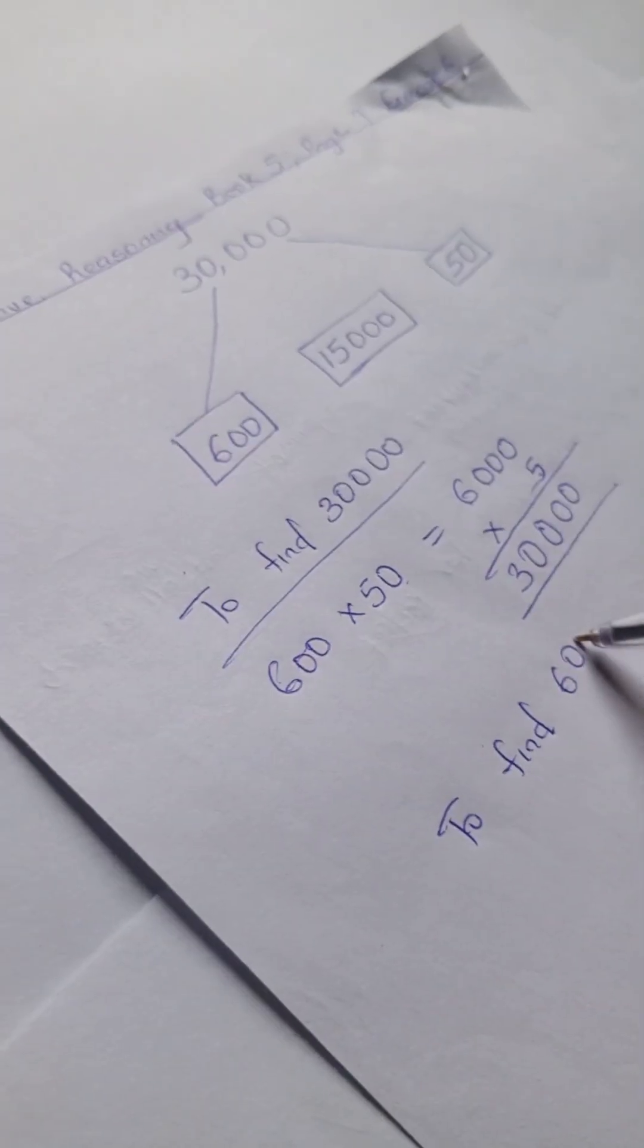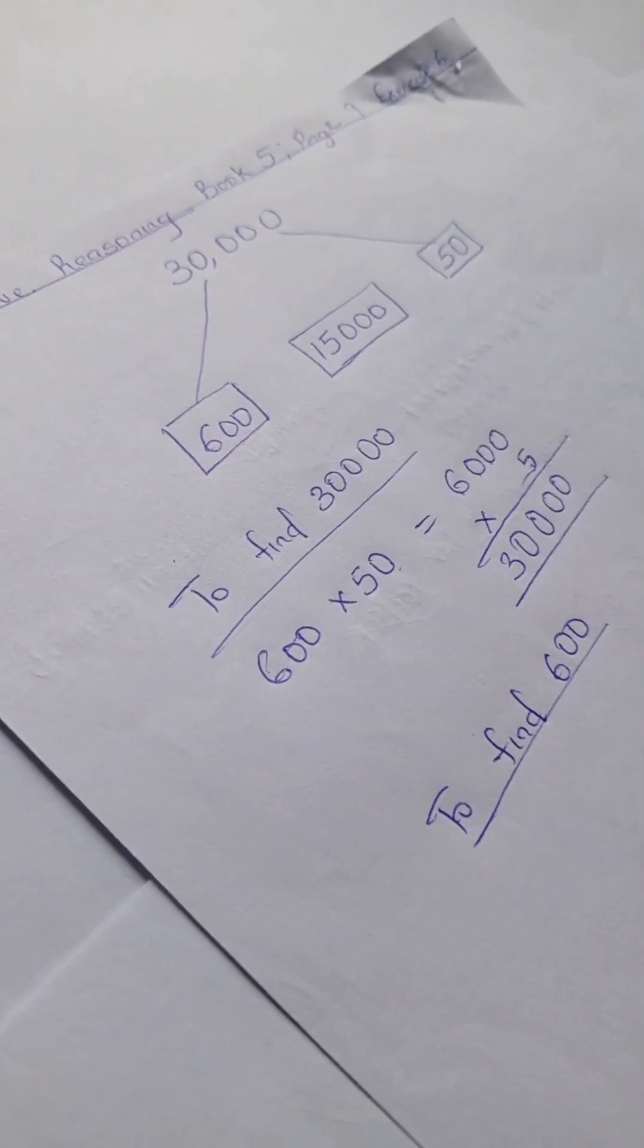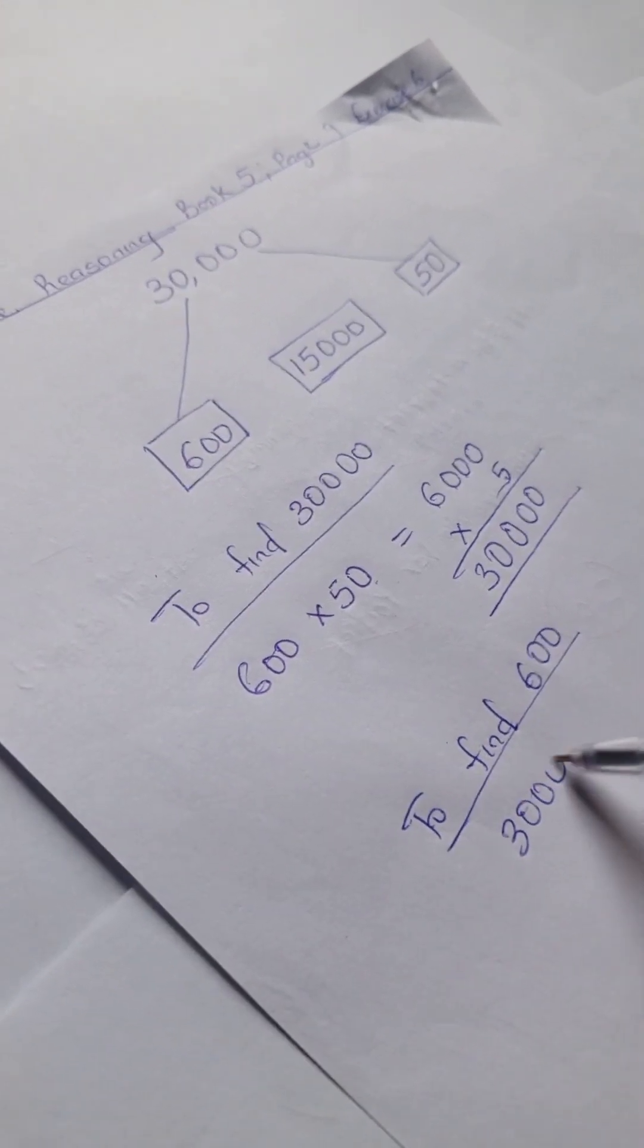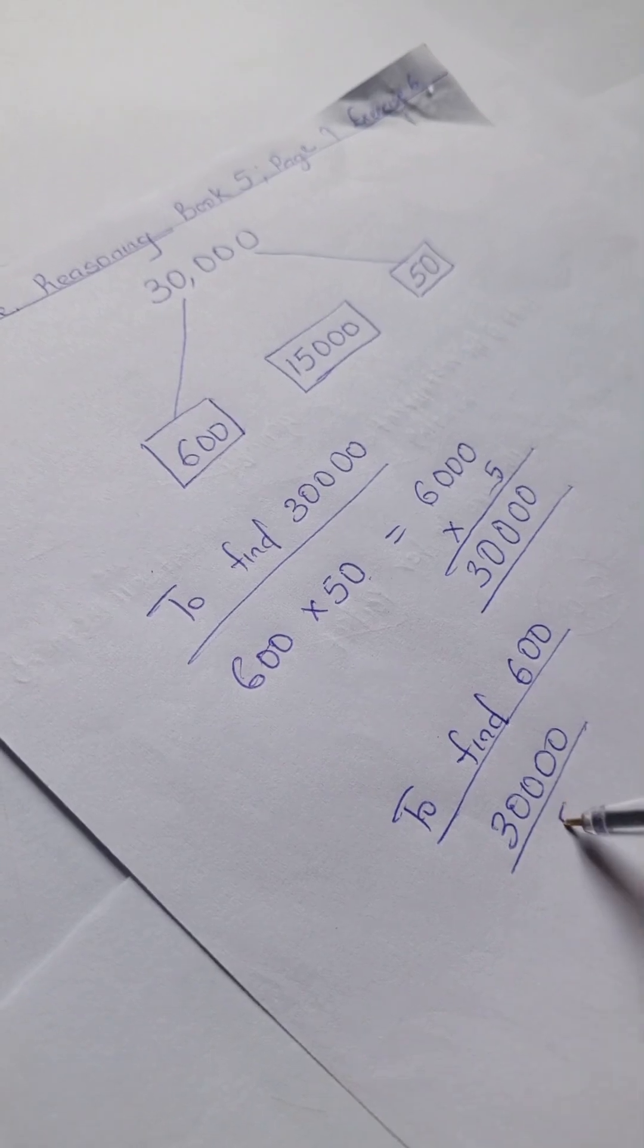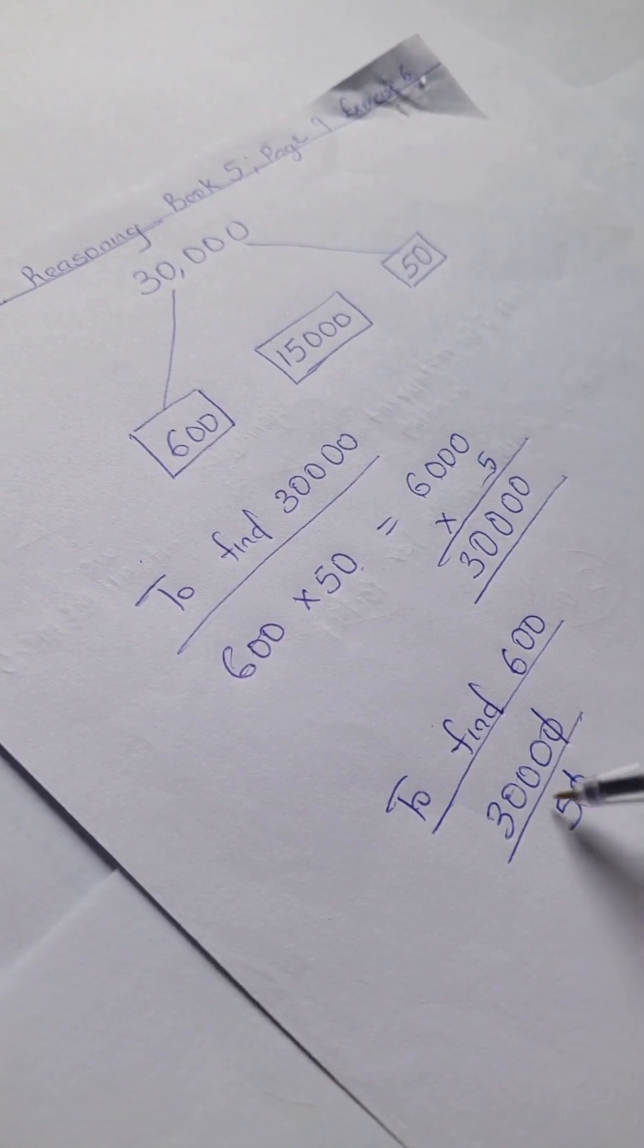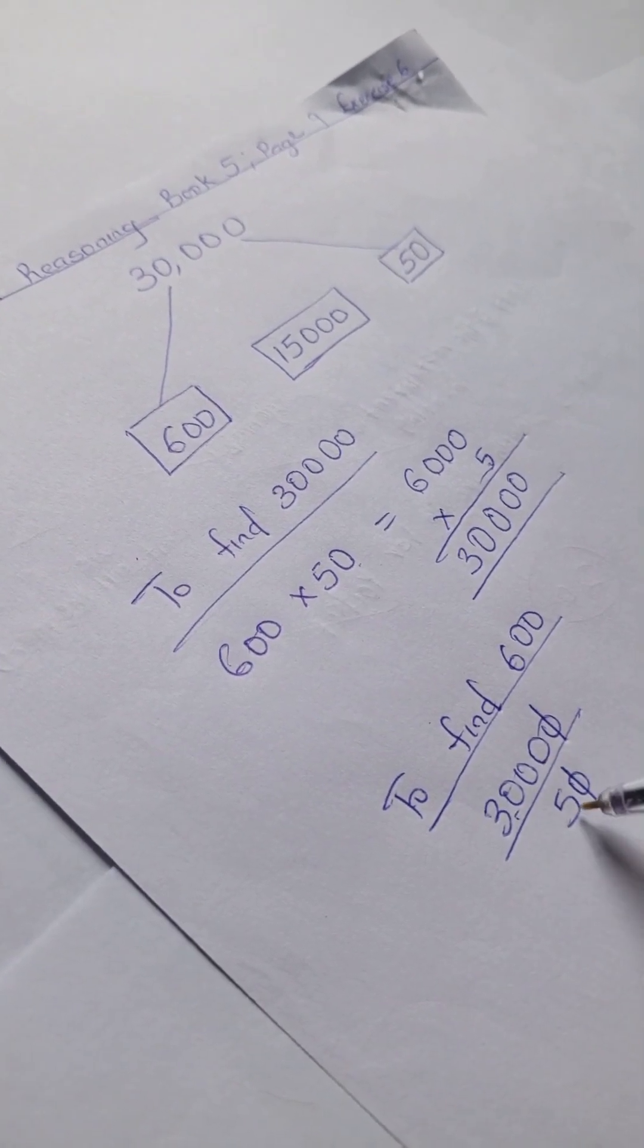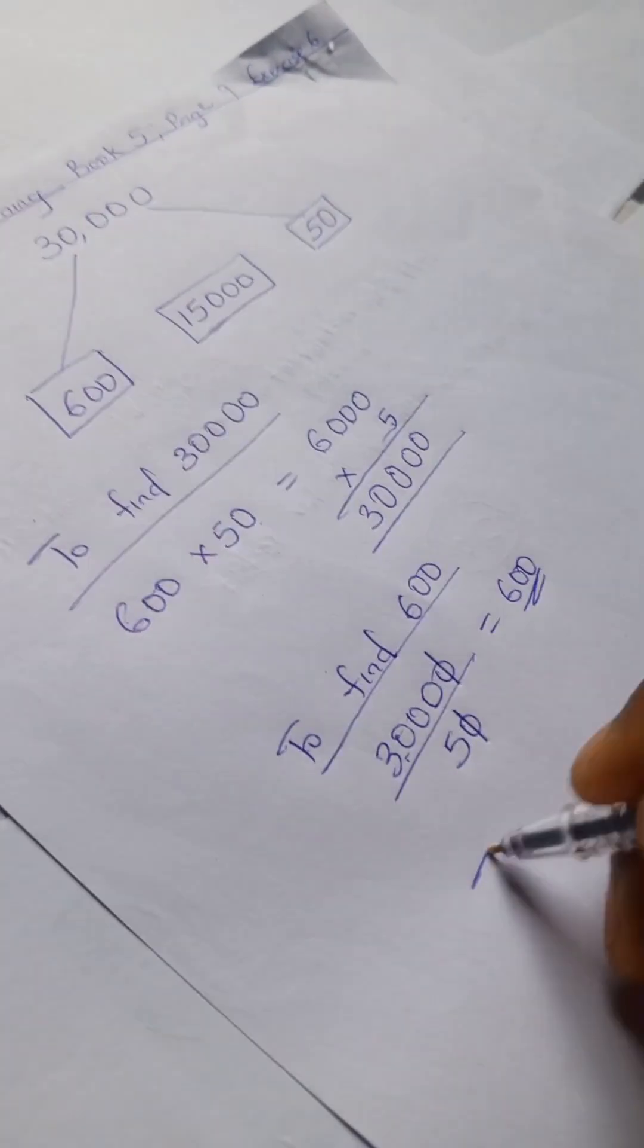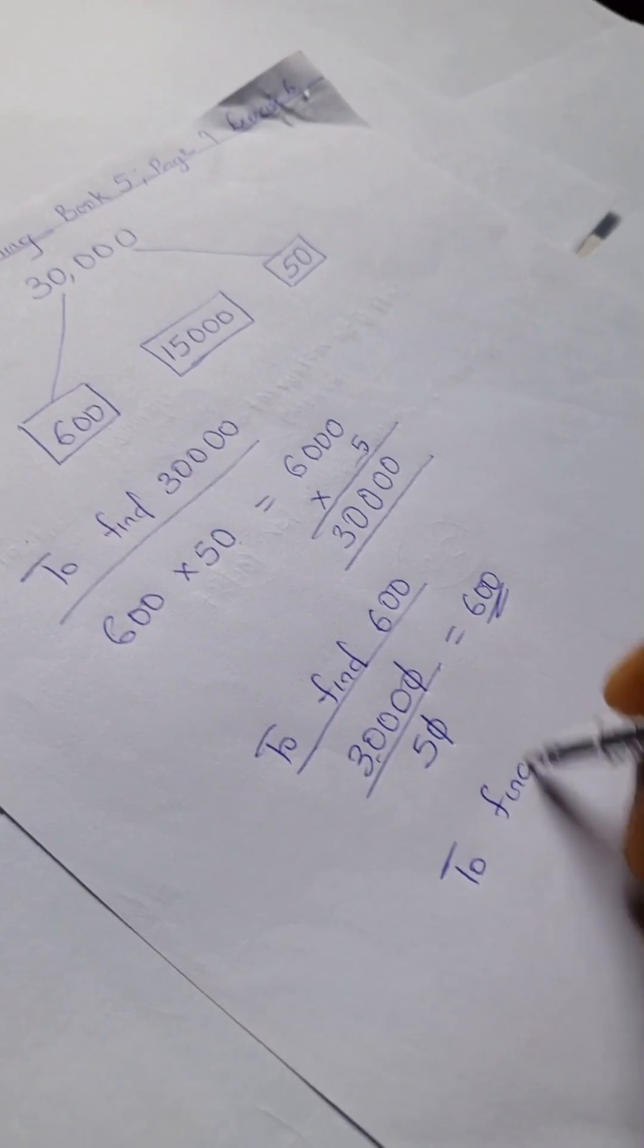To find 600, what you simply do is 30,000 divided by 50. So you can cross this zero against this and we have 3,000 divided by 5 and you have 600.